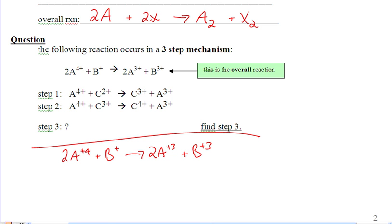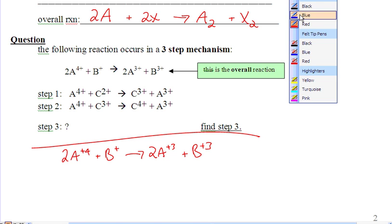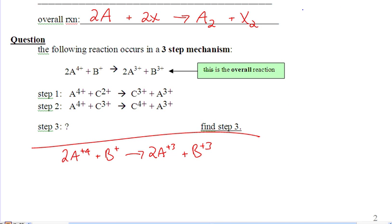What you have to do is look at the overall reaction and look at what is given in step one and step two. And come up with what should be step three. The first thing I notice is that there are no C's in the overall. So we have to create something in step three that cancels off the C's. Well, C3's cancel off on their own. So let's cancel off the C plus four by adding a C plus four. And let's cancel off the C plus two by adding a C plus two.